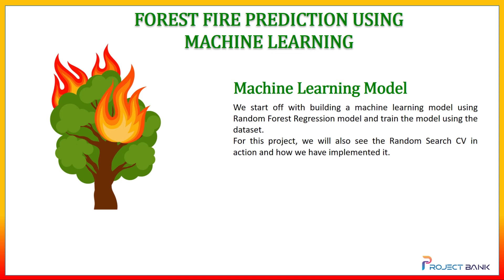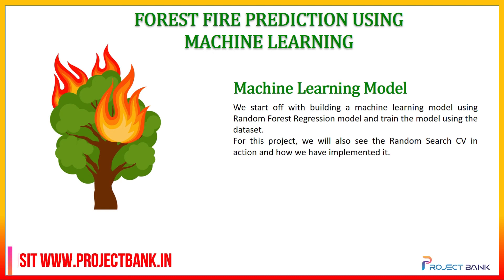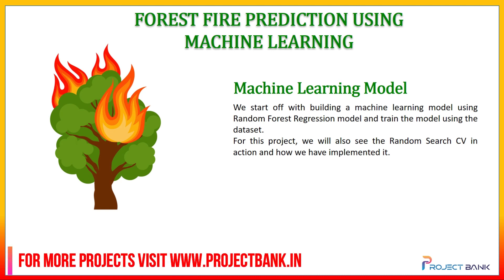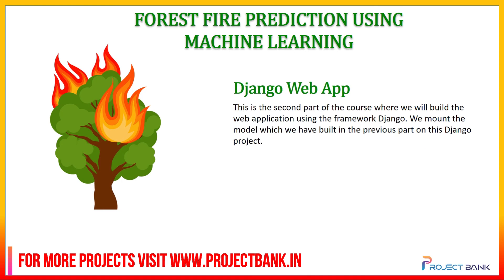For example, let's say we have seven parameters and we set four of them to have a constant value while the remaining three are set as variables with a range of values. Random Search CV will use those ranges for the three variable parameters and choose the combination for which the model works best.